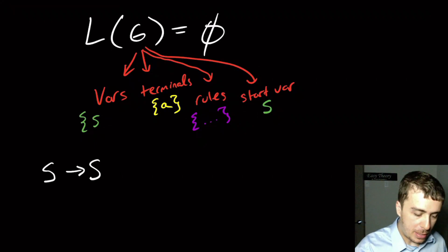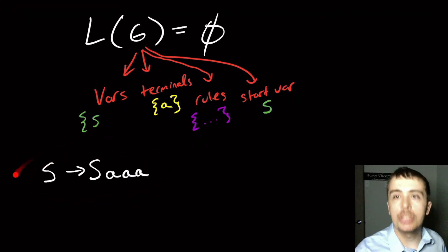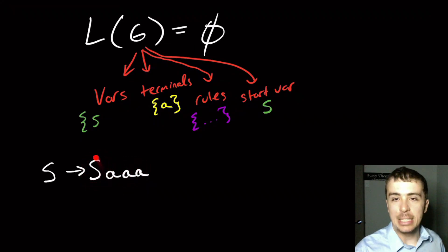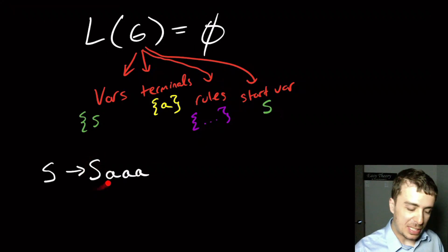In fact, we could actually modify this. So if I had like three As, for example, right here, then this grammar also has the empty language. Because even though there are terminals here, they're always attached to the start variable. So it doesn't actually matter that they're present, because I can never get rid of this variable here.